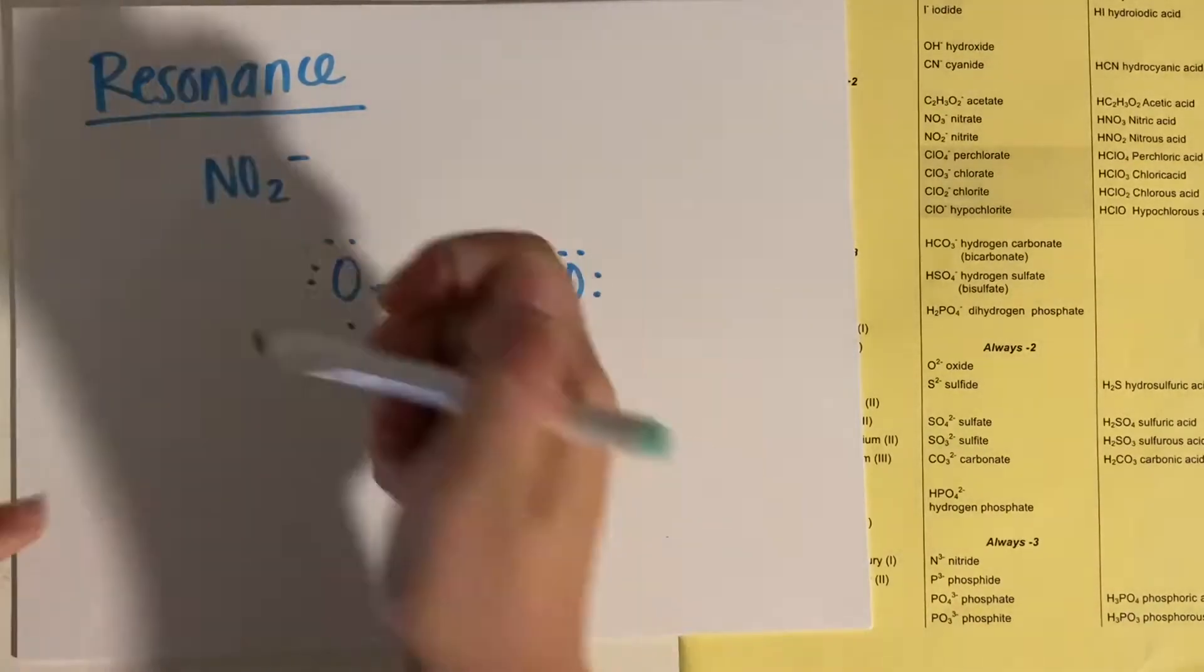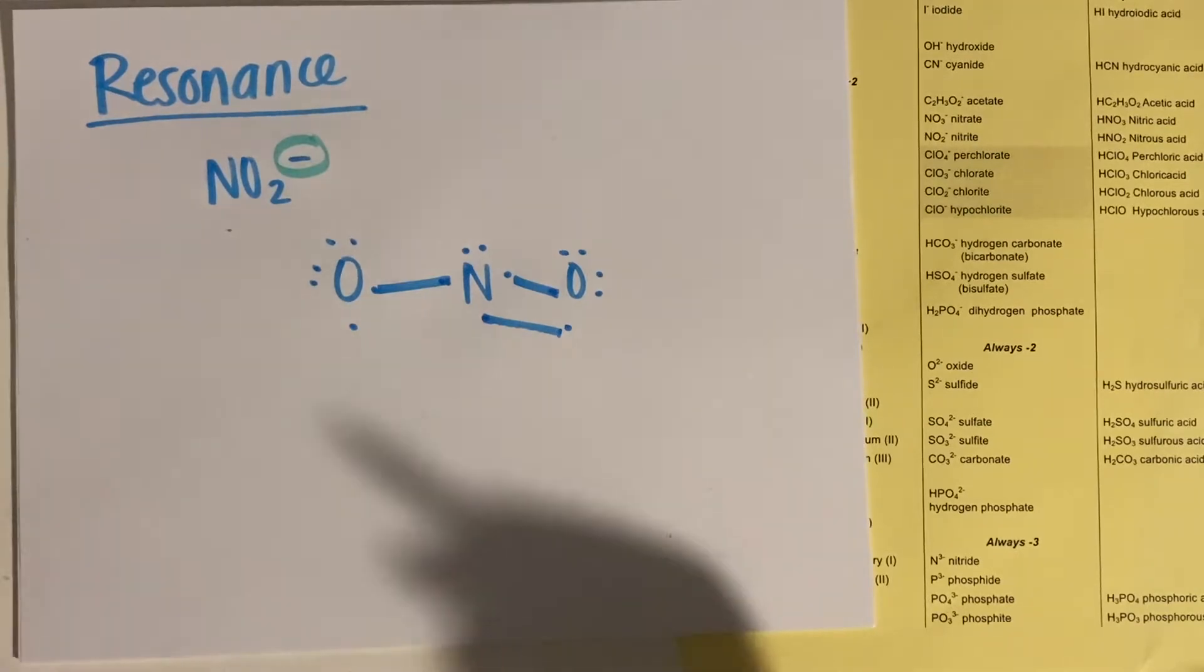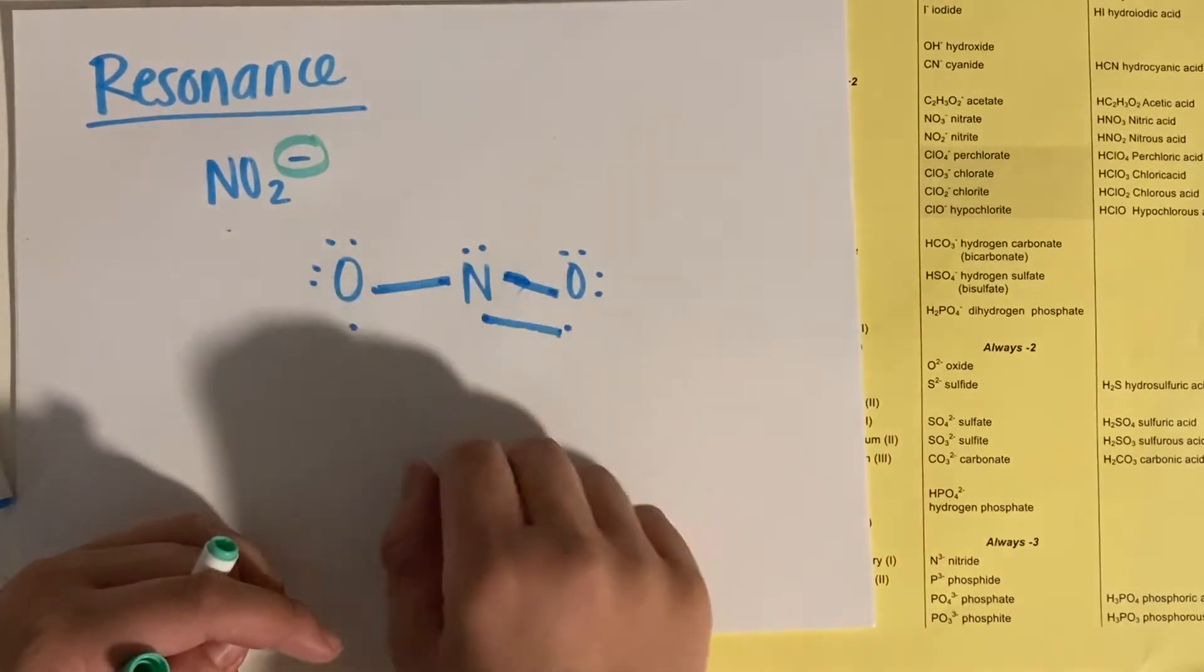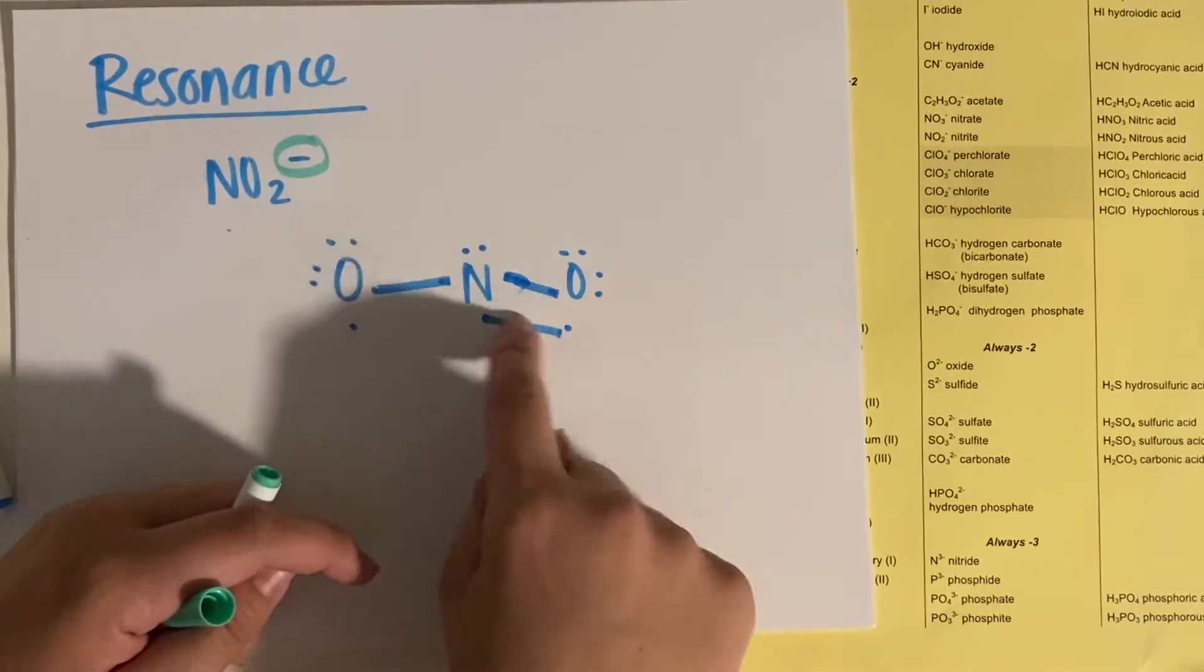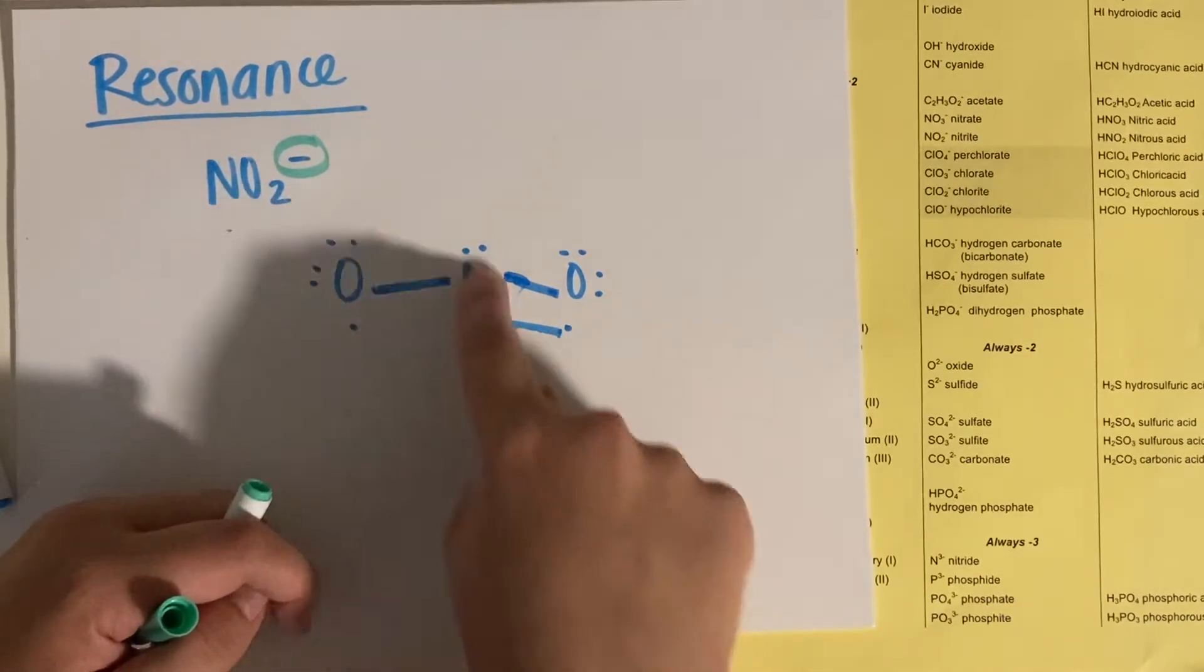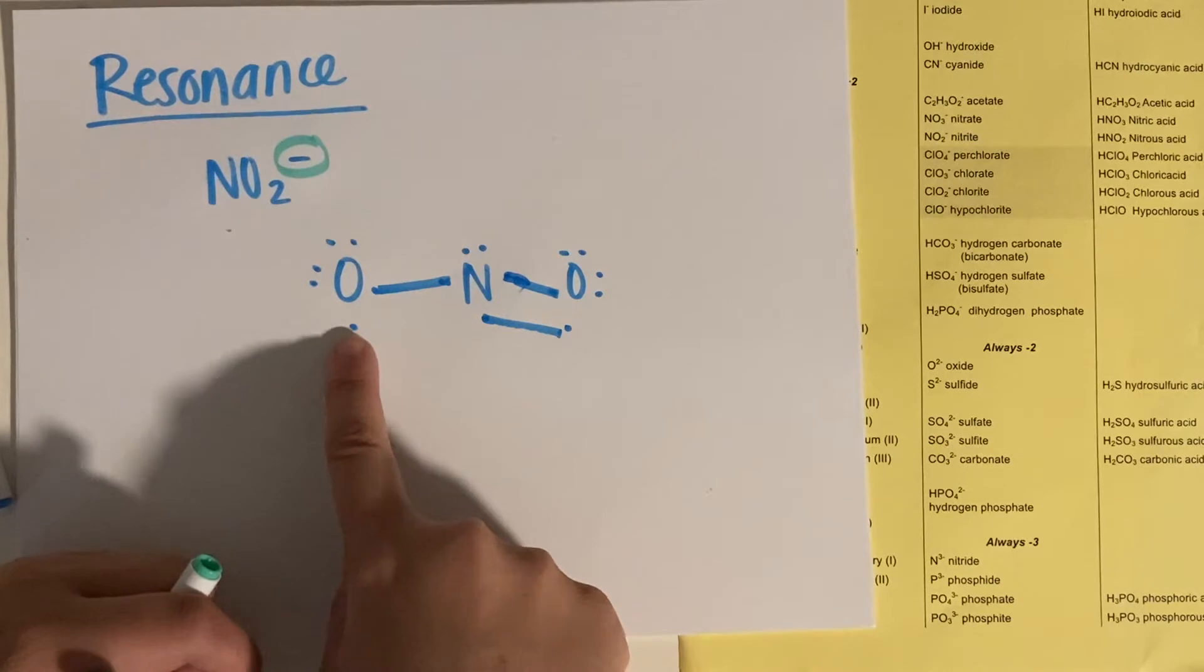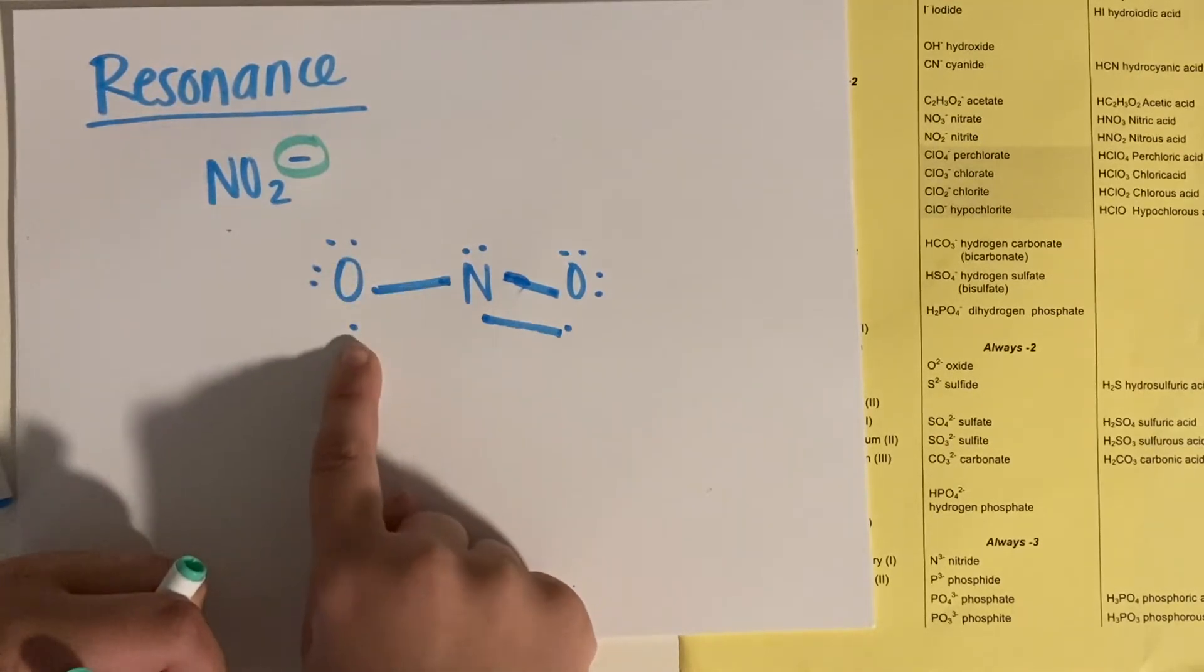Well, this minus charge tells us that we're going to get an extra electron. So far, this oxygen's happy. He has two bonds. This nitrogen's happy. He's made three bonds, but this oxygen over to the left is unhappy. He has seven electrons around him right now. One, two, three, four, five, six, seven.